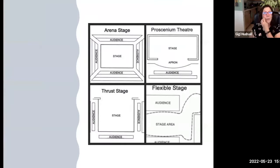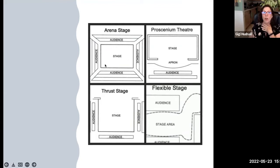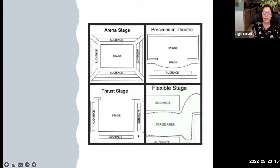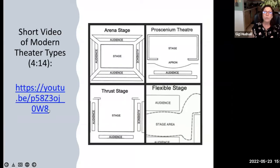Today we have four different types of stage. There's an arena stage where everyone sits around the stage. There's a proscenium stage, which looks like a picture frame you're sitting and looking into. There's a thrust stage where the stage comes out and the audience is on three sides. And there's a flexible stage where you can move it all around. Let's watch a short video about some of the modern types of theater.